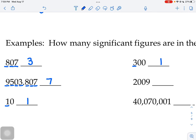If you got a number like 2009, the two counts and the nine counts, so now we have two zeros stuck in the middle of our two and nine. Well you can have like a whopper sandwich, all the zeros stuck in the middle count, so this guy has four.